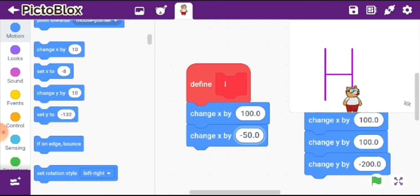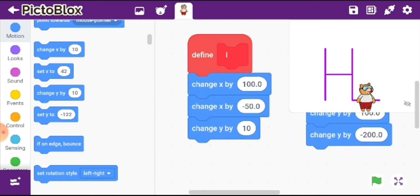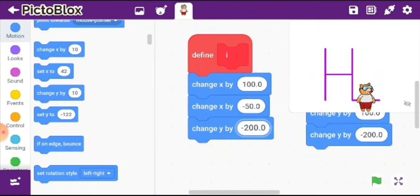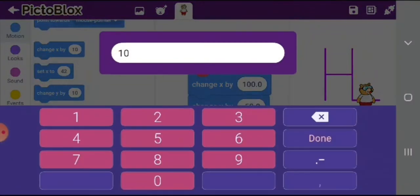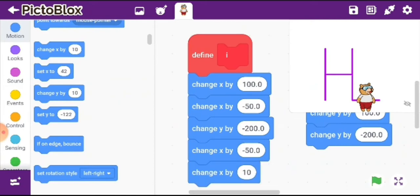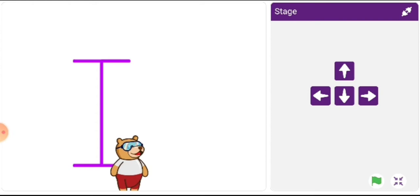It will be minus 200, change y by minus 200. Then change x by minus 50 and then come back by 100. Let us see now. I is also done and J is very easy, so we are going to finish.